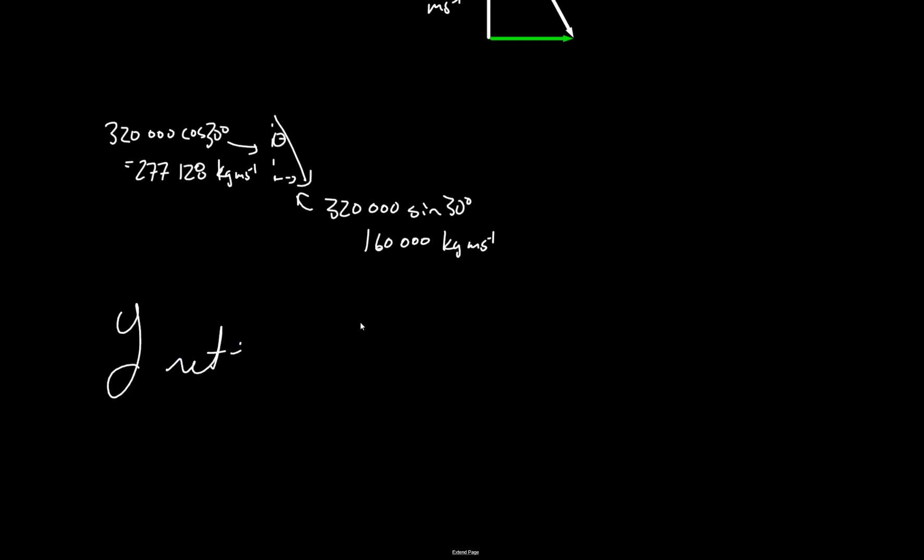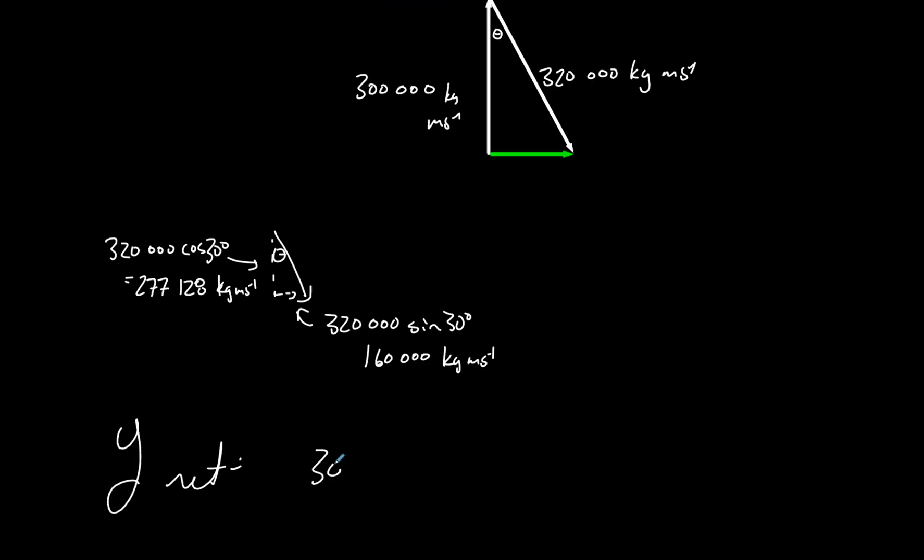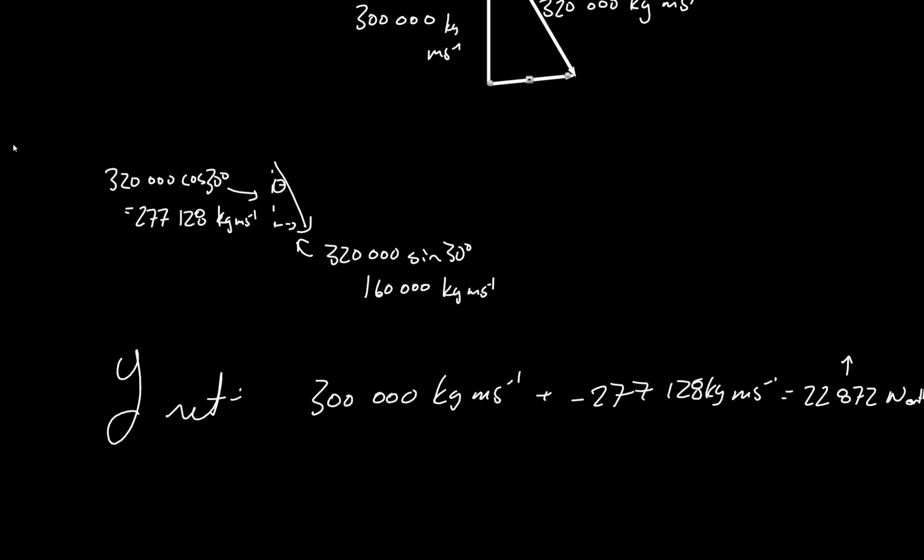So now we have to find our sum of our y vectors. So we've got 300,000 kilogram meters per second aiming to the north, plus 277,128 kilograms meters per second, but that's aiming to the south. So we'll put it as a negative value and see what we get. So that leaves us with 22,872 kilogram meters per second in the northern direction. So actually, it should be a bit more like this, because it doesn't quite counteract all of our 300,000 to the north. And then our x net, our momentum in the x direction is just that 160,000 kilogram meters per second off to the east.